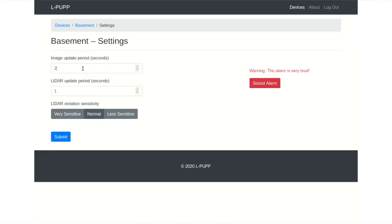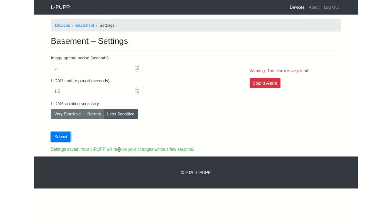In the settings menu, you can configure how often data will be sent to the cloud server. This can be adjusted in order to reduce bandwidth, which may be important if the LPUP is connected to a cellular data plan. You can also adjust the sensitivity of the device here. When you submit any changes, the LPUP will receive them within a few seconds and update accordingly.